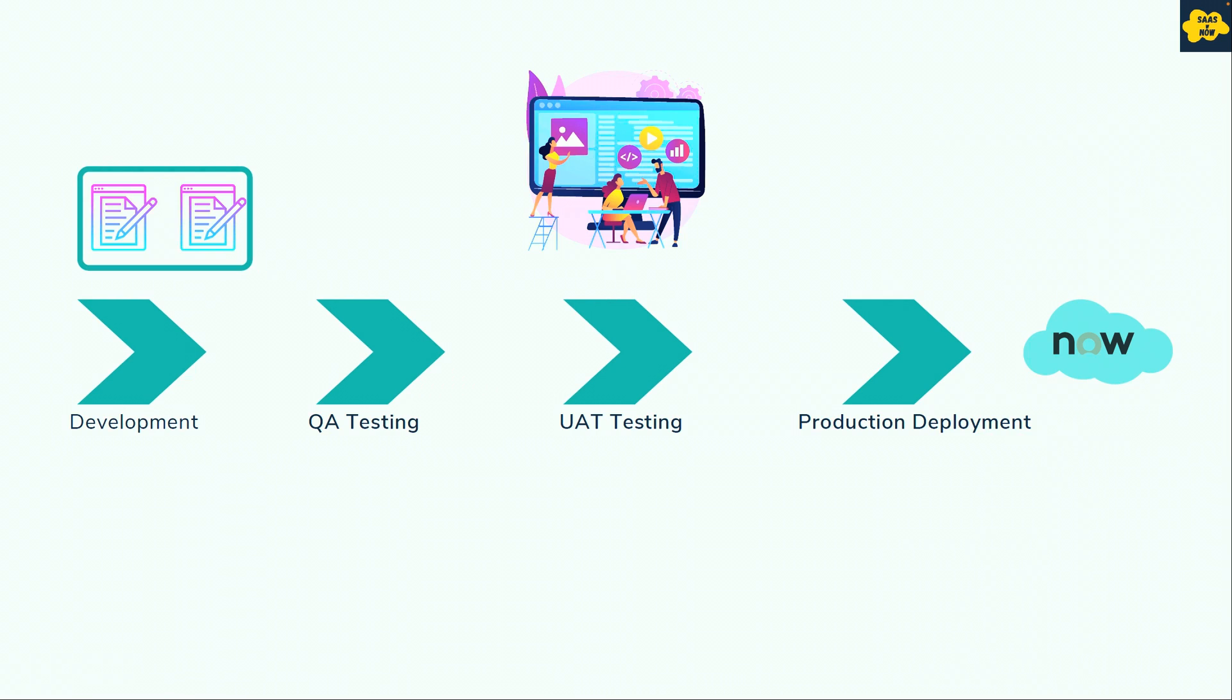requirements go from development, then QA testing, UAT testing, and production deployment. Initially, the platform is on a base version which has out-of-the-box features.